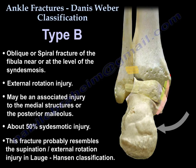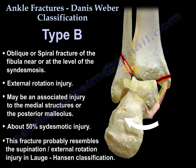Type B in the Weber classification is an oblique or spiral fracture of the fibula near or at the level of the syndesmosis. It is an external rotation injury, and may have associated injury to the medial structures or the posterior malleolus. There is approximately 50% syndesmotic injury. Type B corresponds to the supination-external rotation injury in the Lauge-Hansen classification.